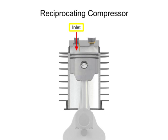The inlet, sometimes called the suction valve, allows atmospheric air to enter the cylinder. The outlet, sometimes called the discharge valve, ejects the newly compressed air from the cylinder.